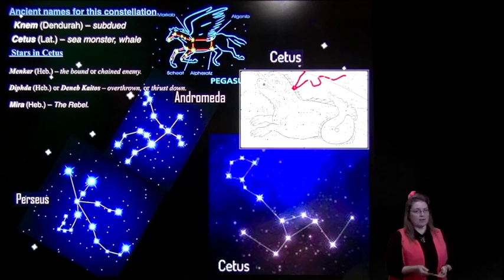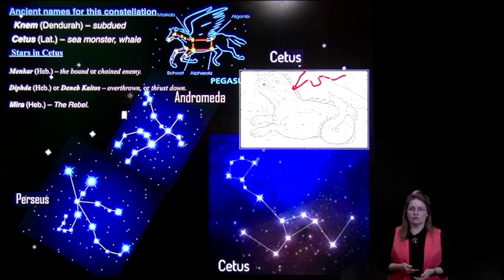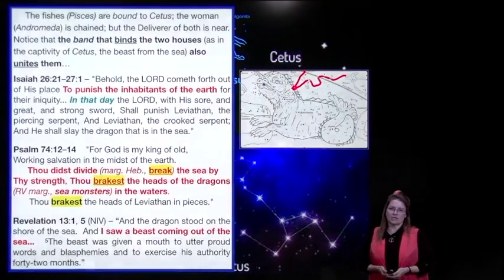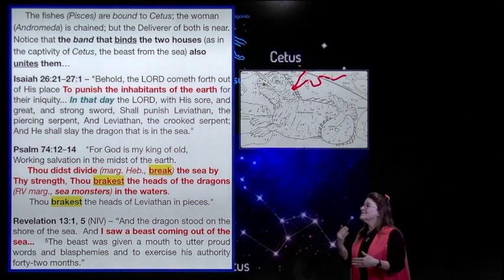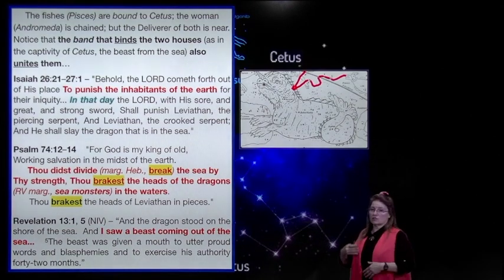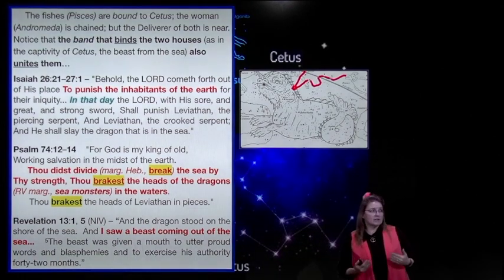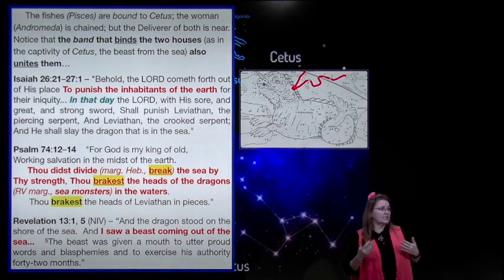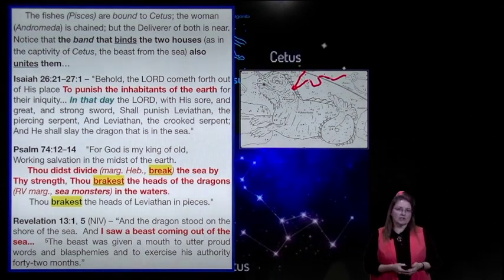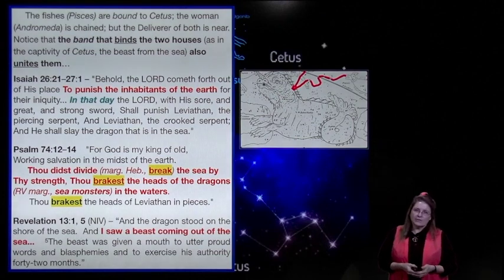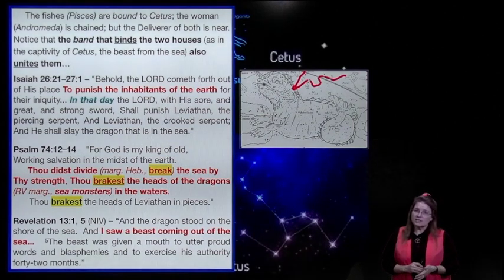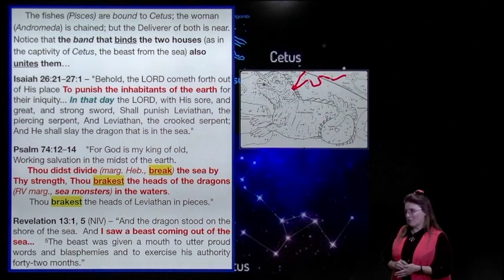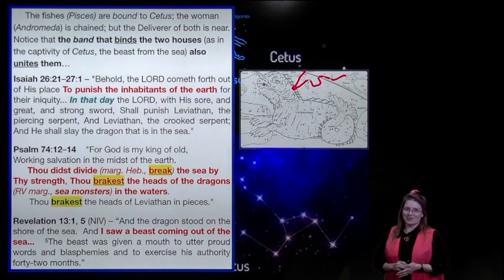He's the enemy of she who is bound and chained. The fishes of Pisces are bound to Cetus. The woman Andromeda is chained. But the deliverer of both is near. Notice that the band that binds the two houses of Israel to Cetus also unites those two houses of Israel.